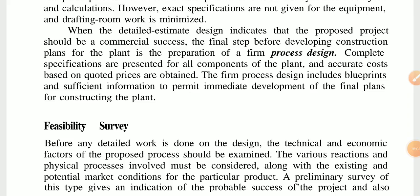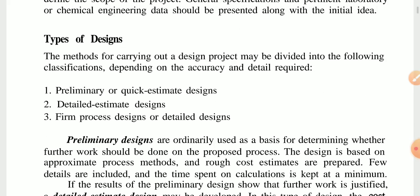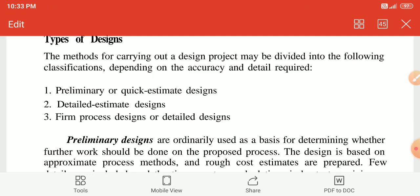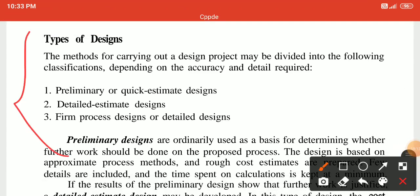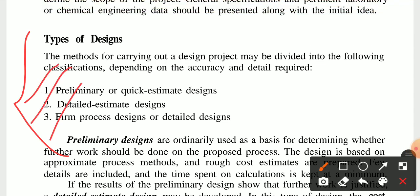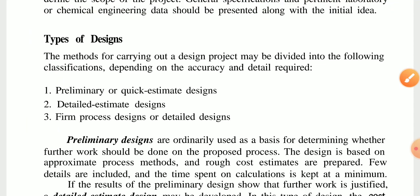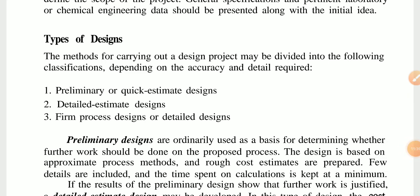The first classification is the feasibility survey. The design method classifications include preliminary, detail, and film process design. This has been a simple discussion on development of a plant design. Thank you so much.